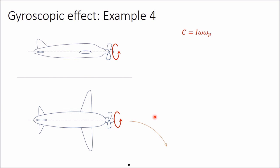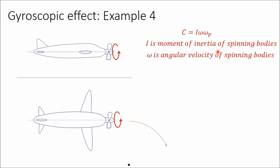Where I is the moment of inertia of the spinning body — here the propeller — which can be calculated using I = mk², where m is the mass of the rotating body and k is the radius of gyration. Next, ω is the angular velocity of the spinning body, the angular velocity of this propeller. If RPM is given, ω can be calculated as 2πn/60, where n is the RPM of the rotating body.